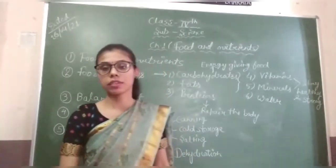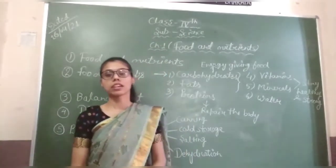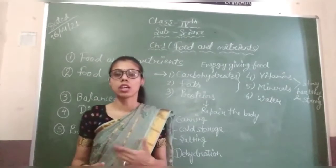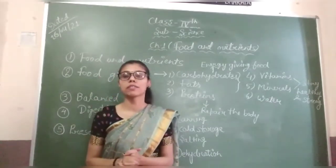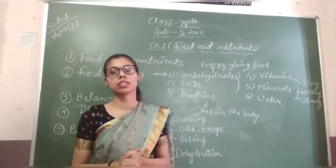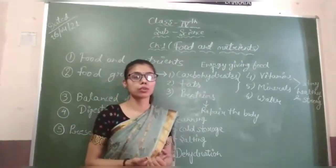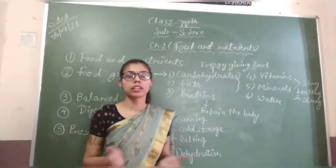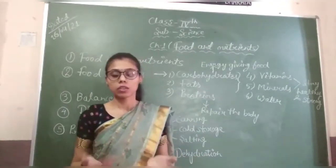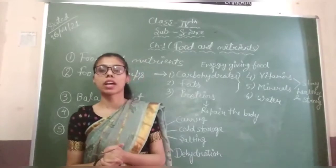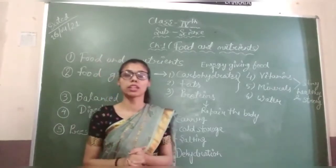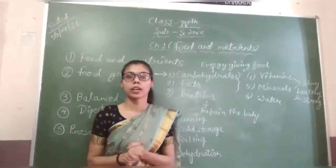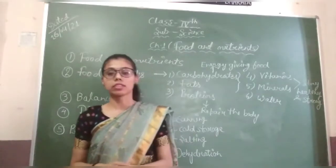Next is roughage. What is roughage? Roughage contains more fibers. Roughage is a food that helps us digest our food. For example, cucumber, beetroot, onion, and tomato. These are fibers that help us digest our food. This is roughage.